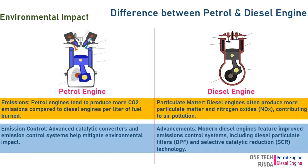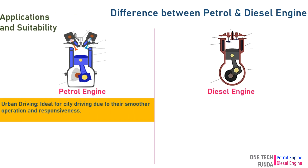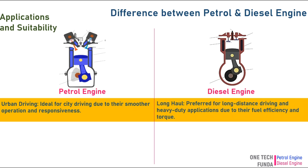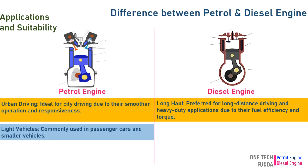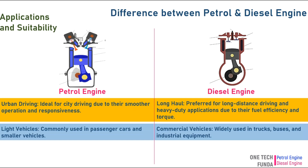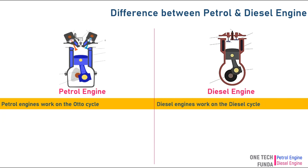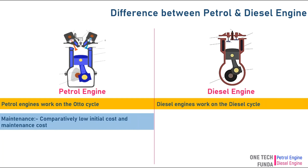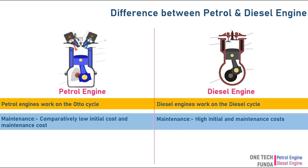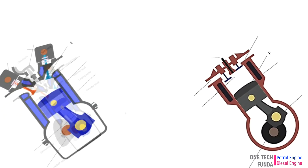Advanced catalytic converters and emission control systems help mitigate environmental impact. Modern diesel engines feature improved emissions control systems, including diesel particulate filters and selective catalytic reduction technology. Petrol engines are ideal for city driving due to their smoother operation and responsiveness, while diesel engines are preferred for long-distance and heavy-duty applications. Petrol engines are commonly used in passenger cars and smaller vehicles; diesel engines are widely used in trucks, buses, and industrial equipment. Petrol engines work on the Otto cycle; diesel engines work on the diesel cycle. Petrol engines have comparatively low initial and maintenance costs, while diesel engines have higher initial and maintenance costs.